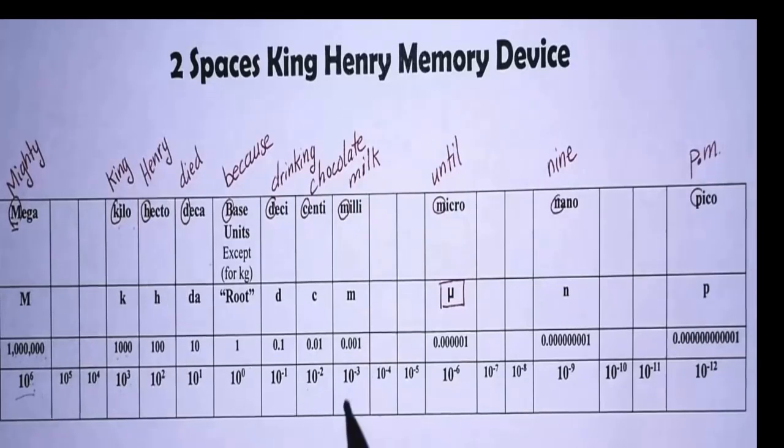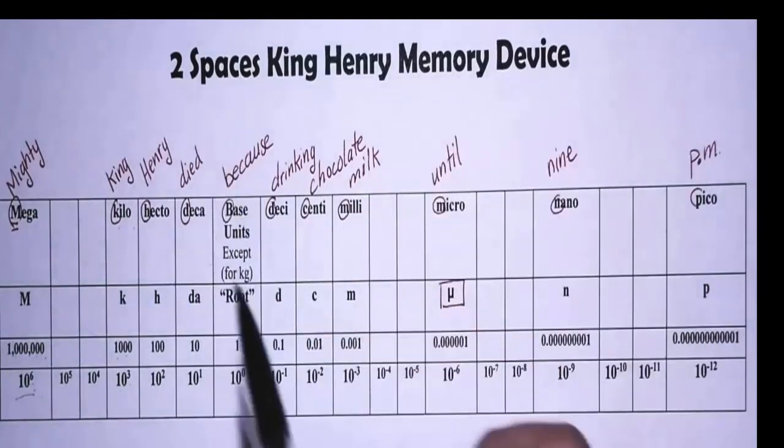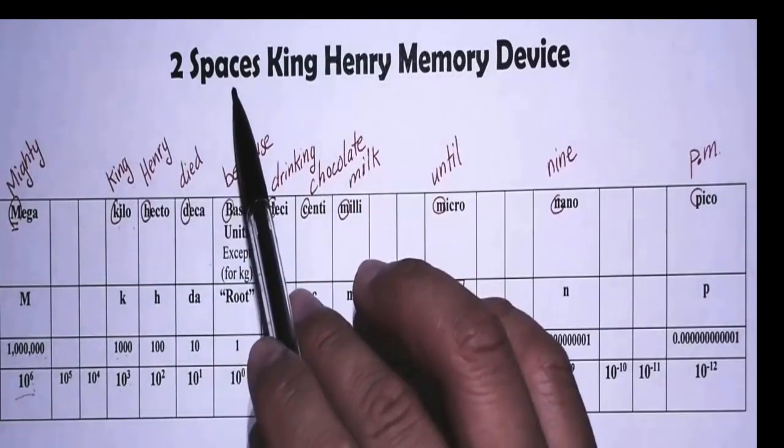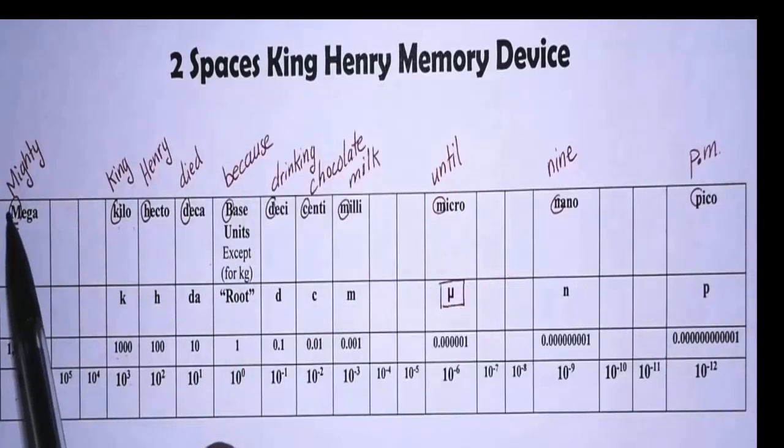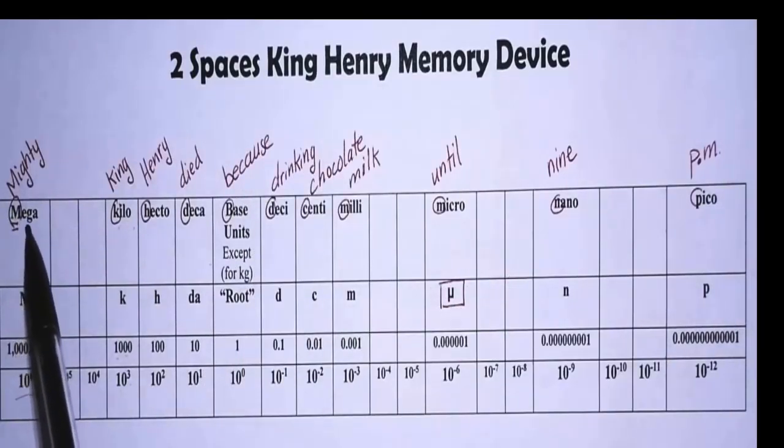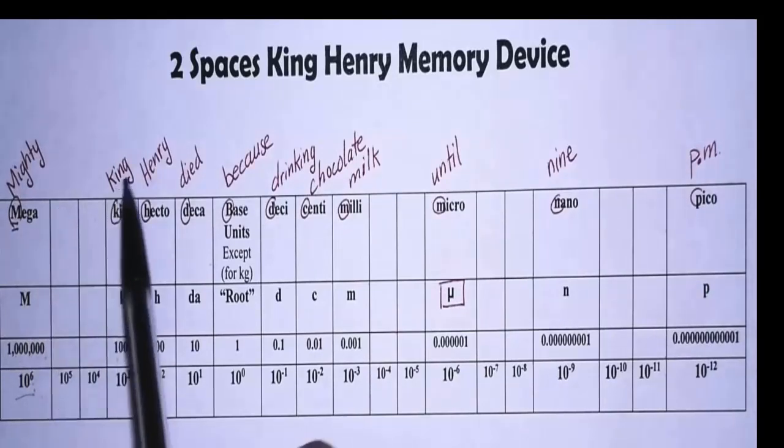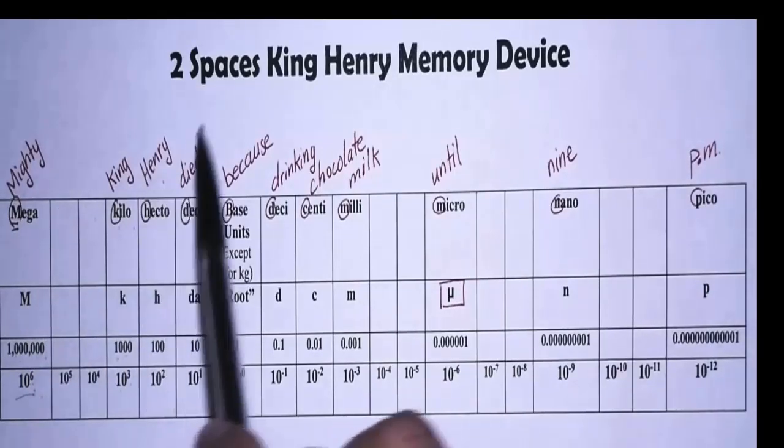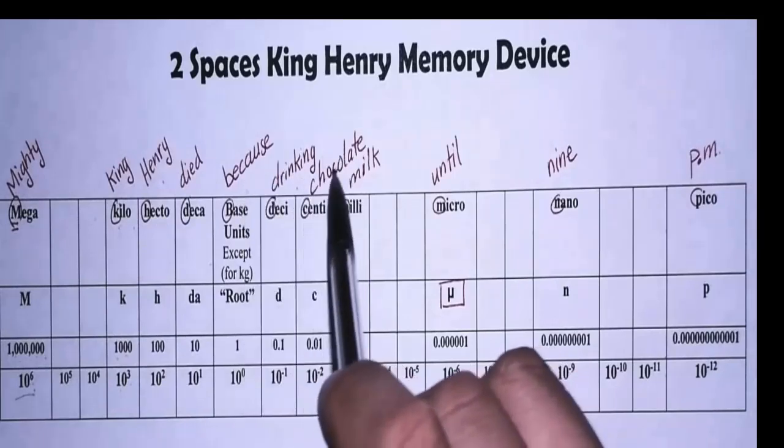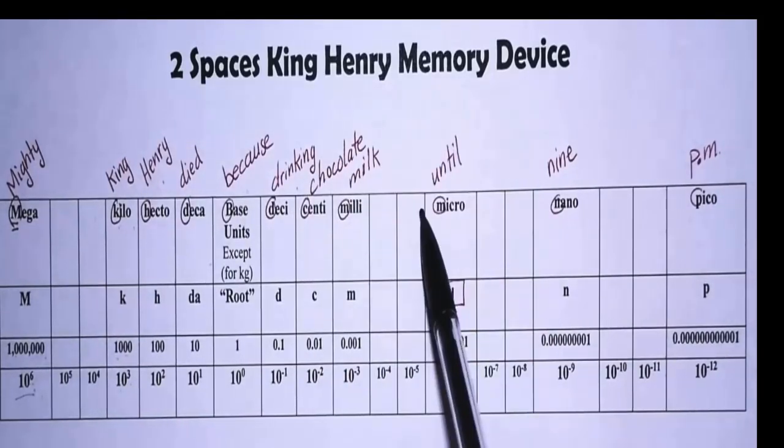Now let's go back and learn how to use this memory device. Again, the name is called Two Spaces King Henry Memory Device. And here is the memory device: Mighty, two spaces, King Henry died because drinking chocolate milk, two spaces, until.